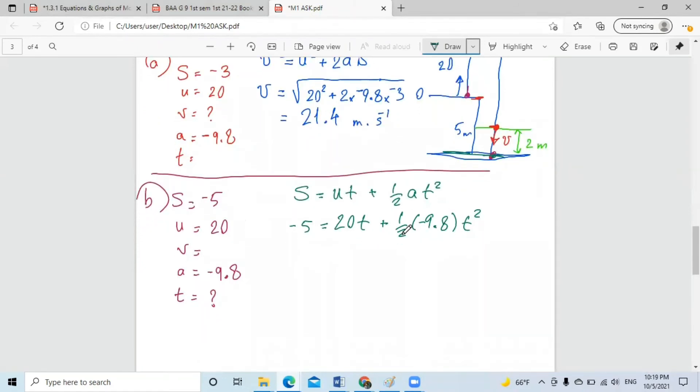Let's arrange the equation and put it to zero. So half times negative 9.8, it's negative 4.9. Move it to the other side, it would be positive 4.9T squared. The 20T, move it to the other side, minus 20T. Minus five equals zero.